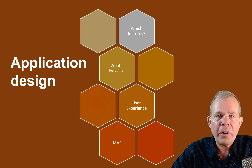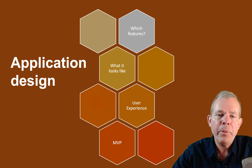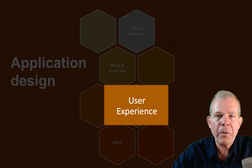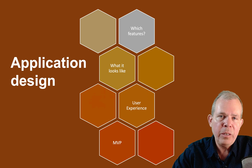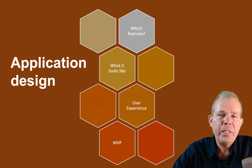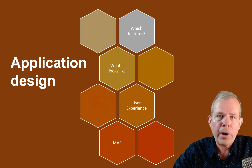In this section, we're talking about application design, and there are four parts to app design. We already talked about which features are essential in making a successful app. The user interface is about what the app looks like. In this video, we're going to talk about the experience that a user has as he or she goes through the flow and execution of your application. And then finally, we're going to talk about the principles of MVP, which is the minimal viable product that you would present to investors and potential users.